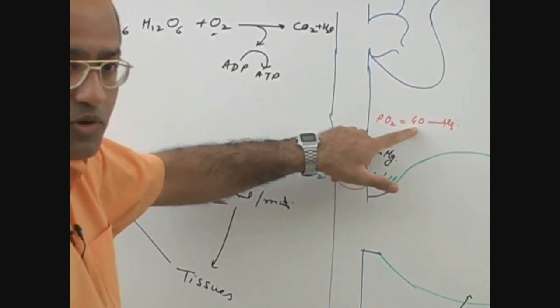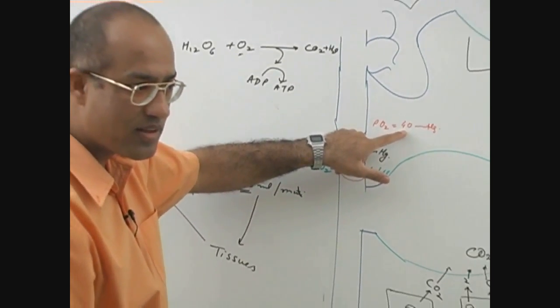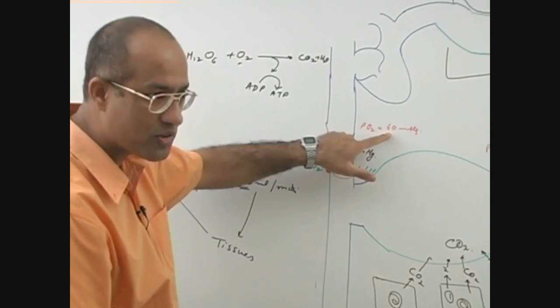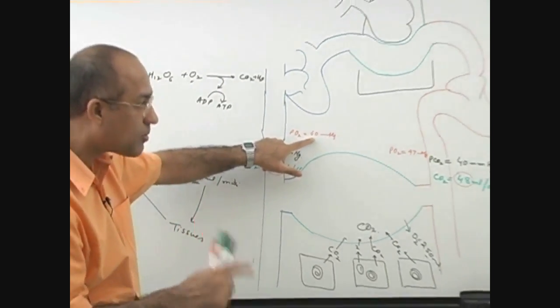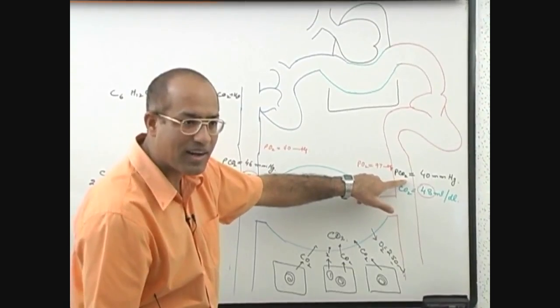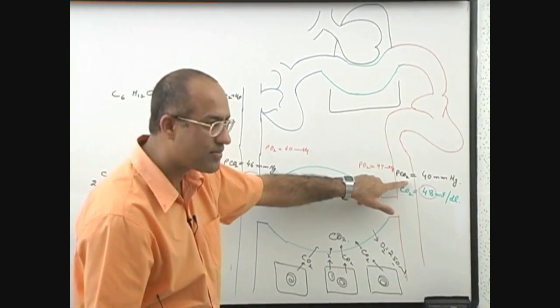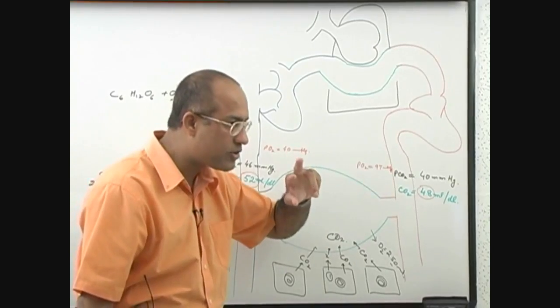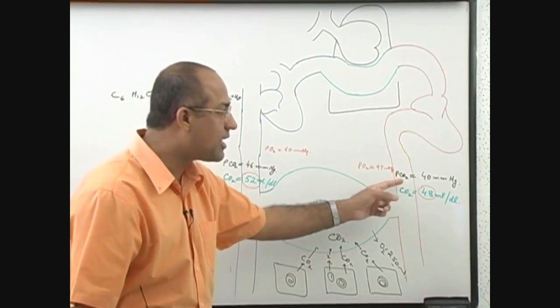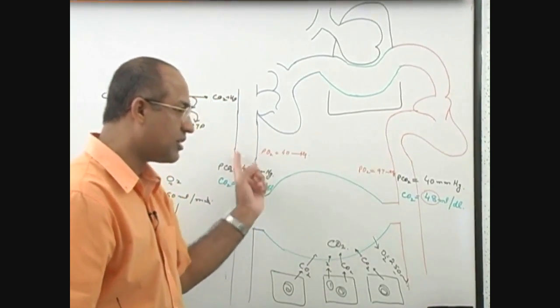Now please, why I deliberately put this value: oxygen is 40 on venous side, is that right? Partial pressure of oxygen. But partial pressure of carbon dioxide is 40 on arterial side, is that right? And in your mind you are to compare arterial and venous oxygens in a different way, and in a different section you should compare the carbon dioxide.